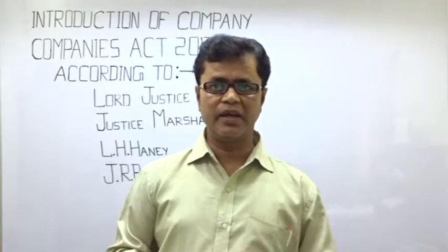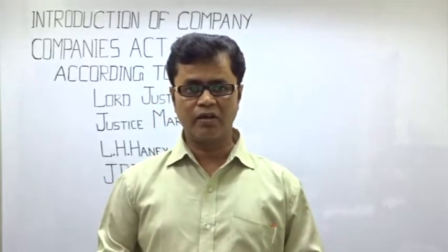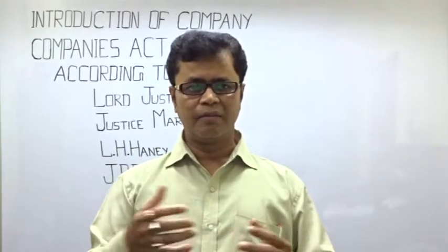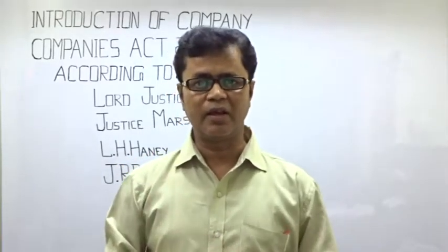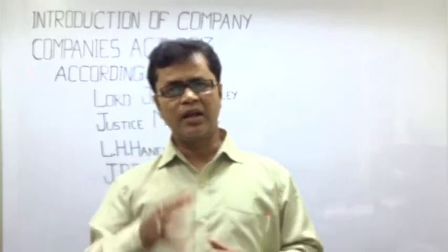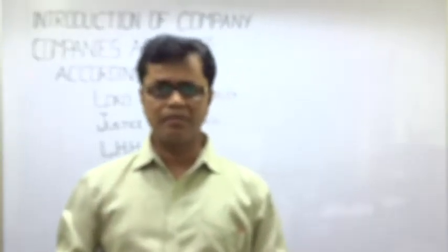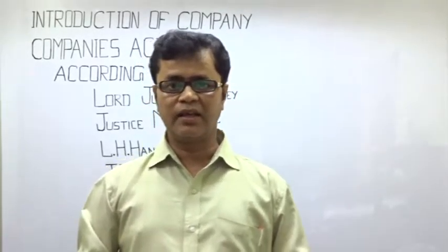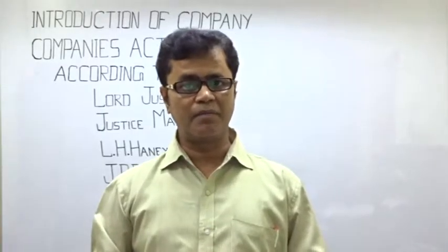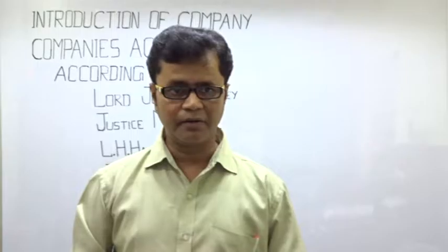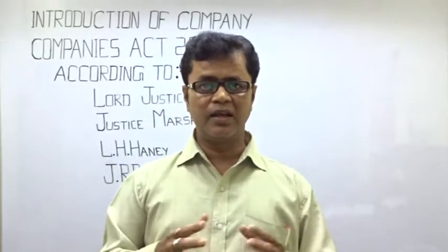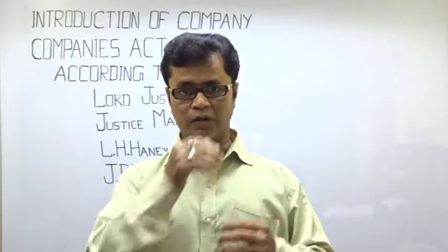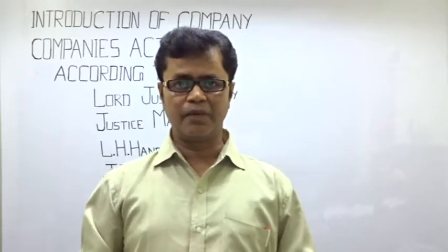कहने का मतलब क्या हुआ — company यानि joint stock company का एक अस्तित्व है जो incorporate है। एक group है व्यक्तियों का जो law के process के साथ से बना हुआ है, जो normally business करते हैं। यह एक artificial person है जो law के आधार पर है। Company की अपनी पहचान होती है, उनके members का नहीं पड़ता जैसे उनके member कोई भी होता है।